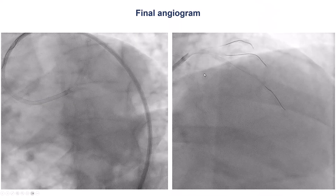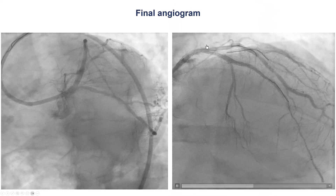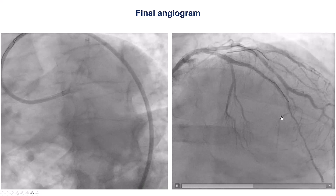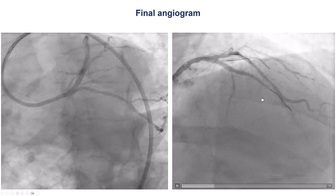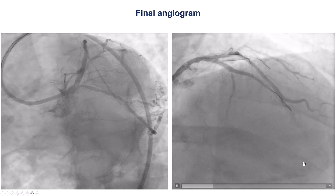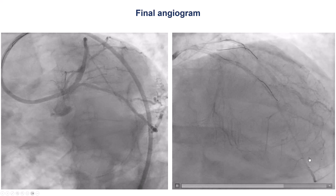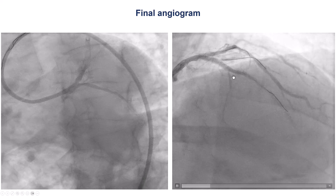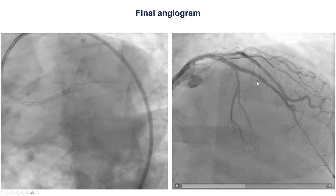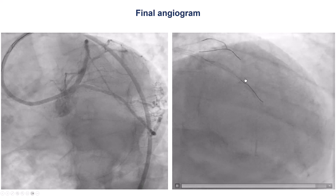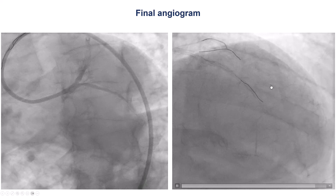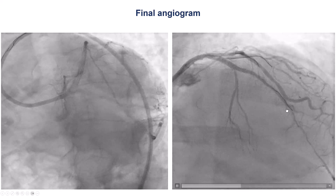We post-dilated and this is the final result. We have nice flow now into the LAD — the flow goes all the way to the apex — but we still have a significant area of the LAD that was not treated with residual disease. We debated about stenting the entire vessel but decided not to place stents throughout the LAD, and instead see how the patient would do. If there was restenosis, drug-coated balloons could be available to treat this segment.